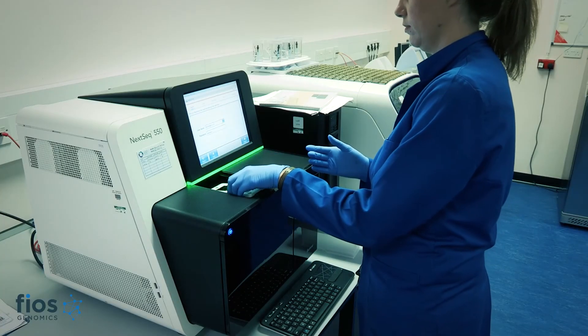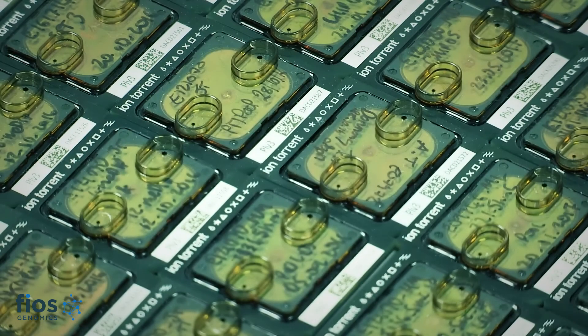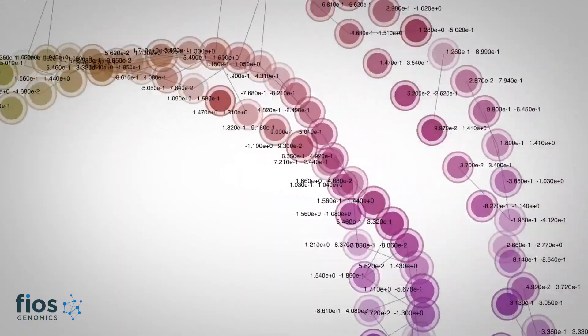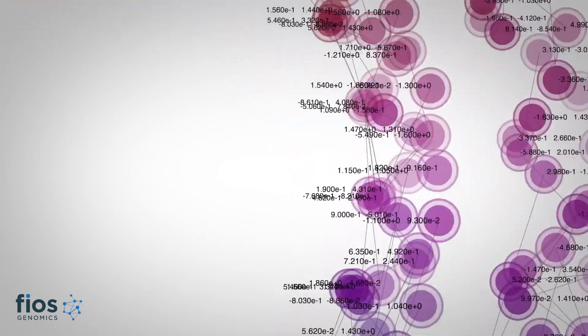Experiment design is all about choices. For most types of biological data we process, there are several platforms available for that data type. For sequencing, for example, there are two or three main platforms. Here at Fios we can advise on the best way to structure your experiment.